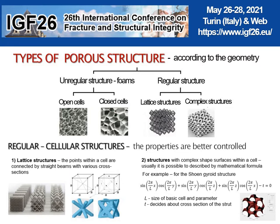The mechanical properties of regular structures are better controlled. The basic building units of geometrically defined porous structures are cells created by simple bodies — for example, cube, cylinder, or sphere. These geometries are usually easy and well modeled in CAD applications.